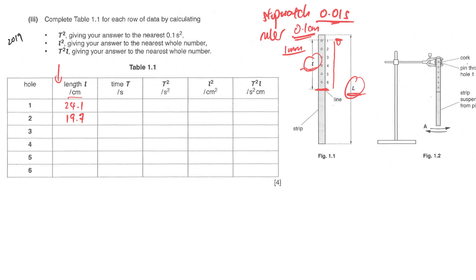The next column is your dependent variable: the time T for ten oscillations. Some students think capital T represents the period as used in theory, but in this experiment capital T represents the time taken for ten oscillations — follow the instructions carefully, or the whole experiment will be wrong. Because you use a digital stopwatch, record to two decimal places. If the reading is 11.20, you still have to write the zero to make it two decimal places.